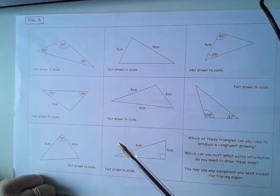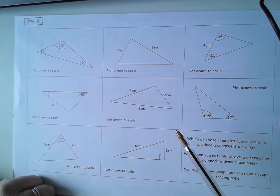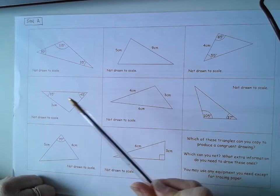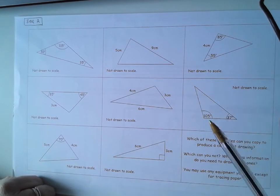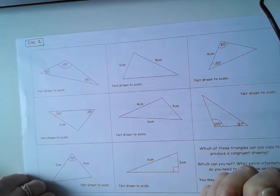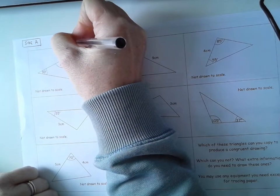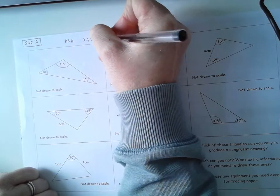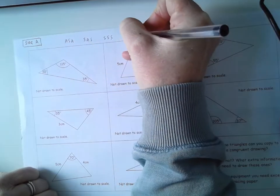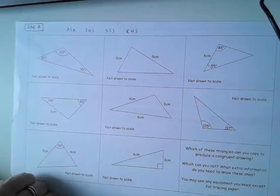So what side A is basically asking us is which of these triangles do we have enough information in order to make an identical copy. In other words, do we have enough information using angle side angle, side angle side, side side side, or right angle hypotenuse side to be able to copy them.